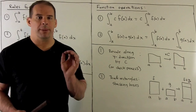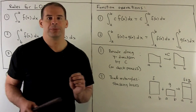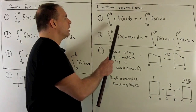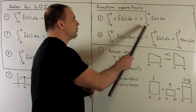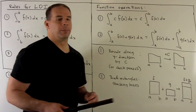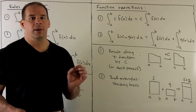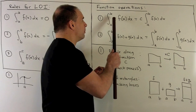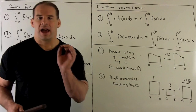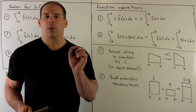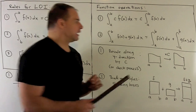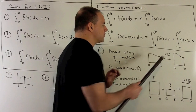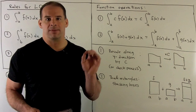We also have rules based on what we can do with the functions. First: if we multiply our function by a constant, it's the same as if you do the definite integral and then apply the constant afterward. Why is this true? Multiplying f(x) by our constant — f(x) represents the y value — so we're multiplying in the y direction by that constant. We're leaving the x direction with the same scale and rescaling the y direction by a factor of c, so that changes the area by that same factor of c.